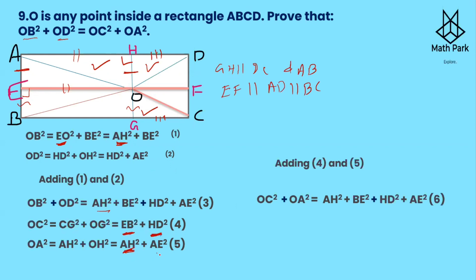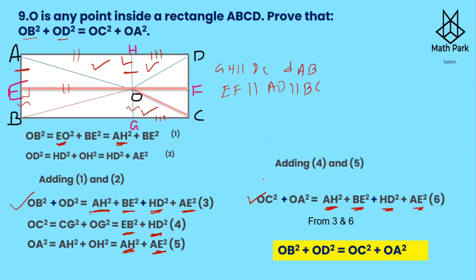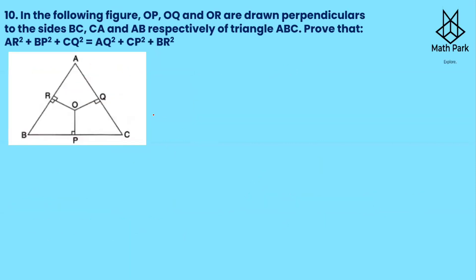Adding equations four and five: OC² + OA² = AH² + BE² + HD² + AE². This is equation six. Comparing equation three and equation six: both equal AH² + BE² + HD² + AE². Therefore OB² + OD² = OC² + OA². Got it!